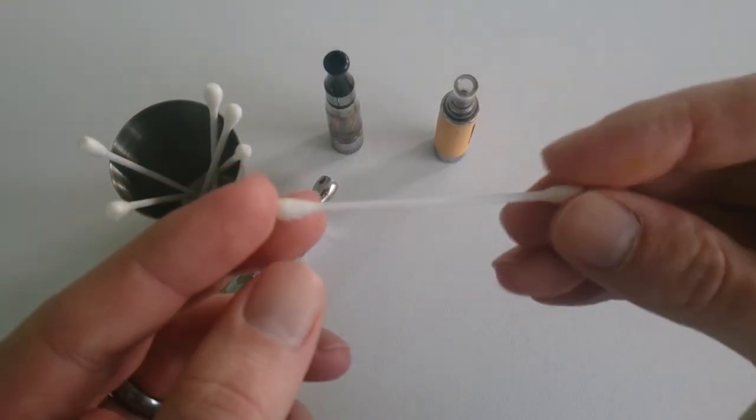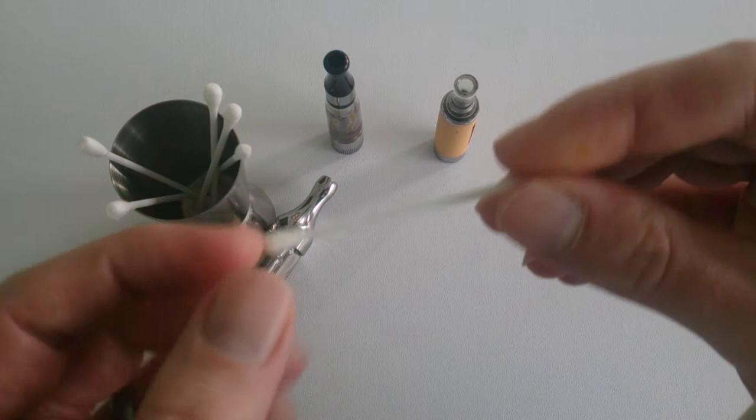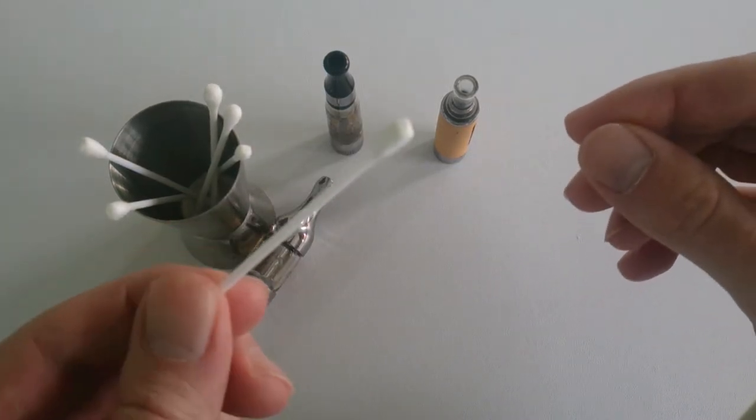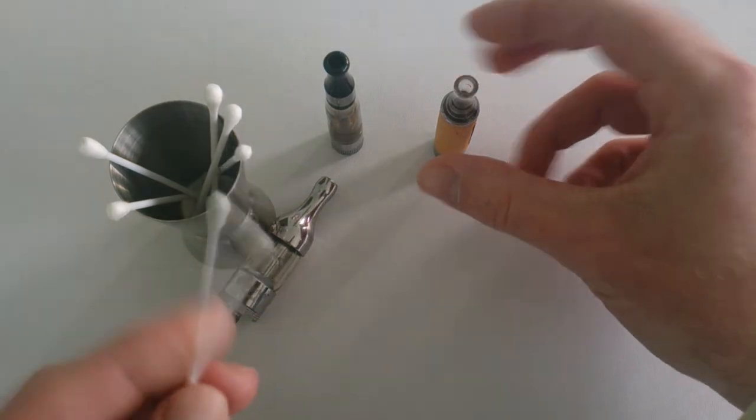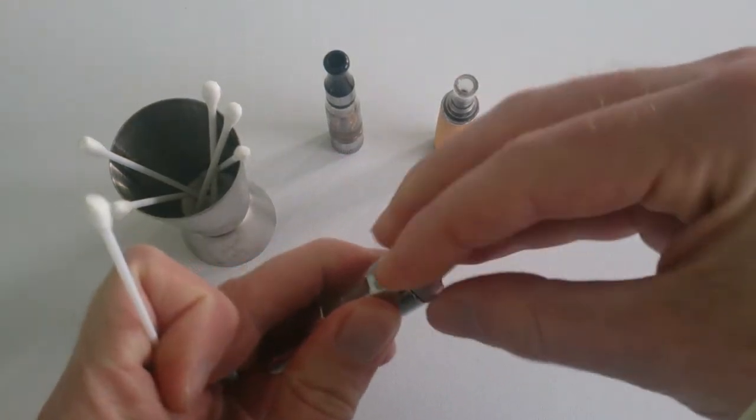A vaping tip: cotton buds. These are like 50p for like 100 of them. Get some of them. They make cleaning and drying all your tanks so much easier. Like these ones, this is a Pro Tank.